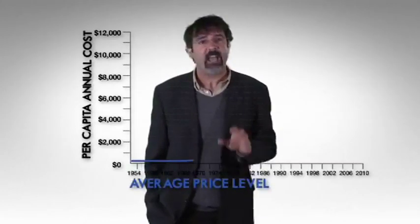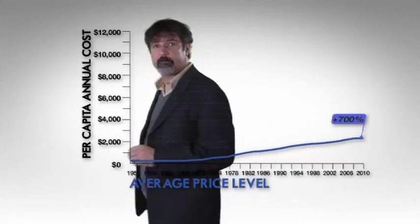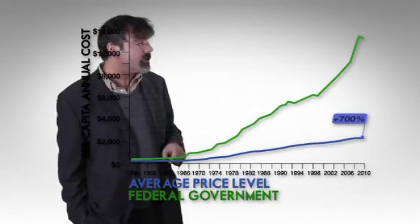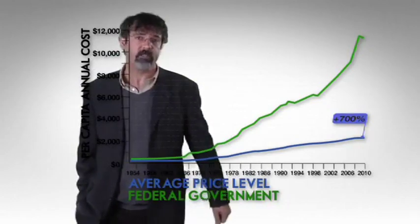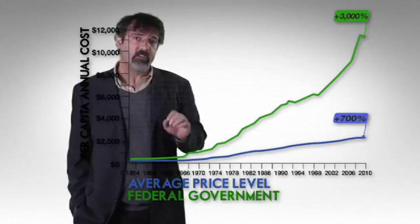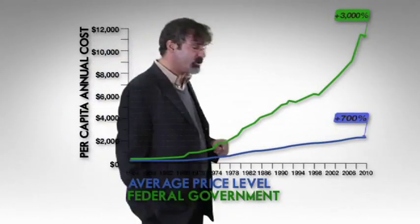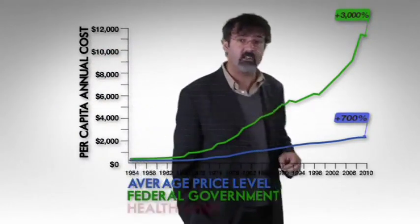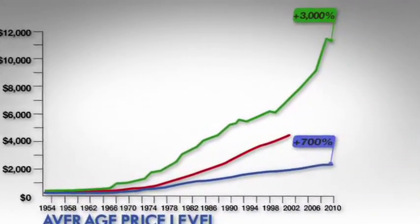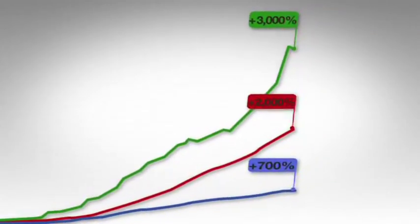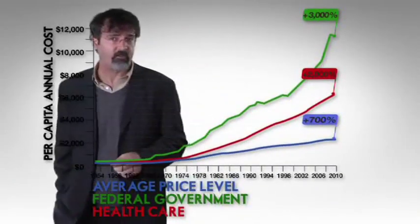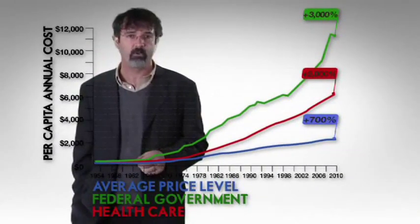Since 1954, the average price level has risen 700%. How does that compare with government spending? Over the same period, the per person cost of government has risen 3,000%. To put that in perspective, the government recently attempted to take over the healthcare industry in an attempt to rein in the rising cost of healthcare. But since 1954, the average cost of healthcare has risen only 2,000%. This suggests that we would have been better off to ask physicians to reform government than to ask politicians to reform healthcare.